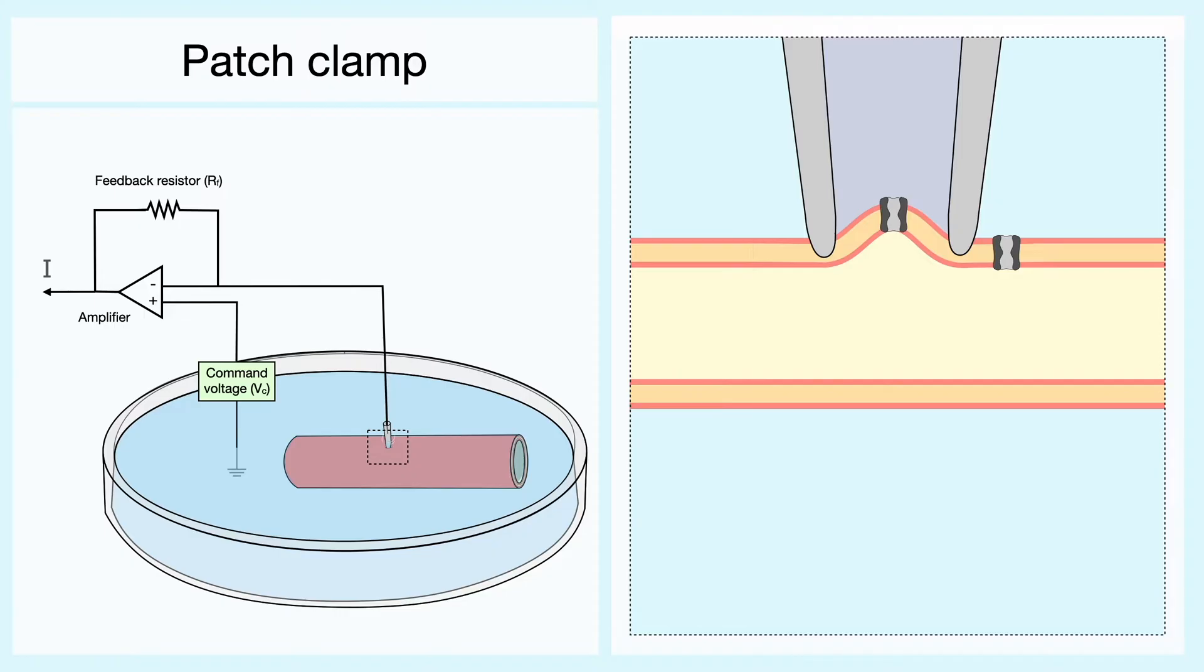One important upside with the patch clamp is that the technique has various configurations that allows the experimenter to vary the experimental conditions more freely. The current setup that we have right here is usually referred to as the cell-attached patch clamp and it allows to directly measure the current from individual channels.